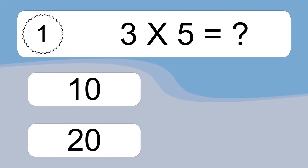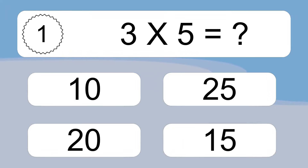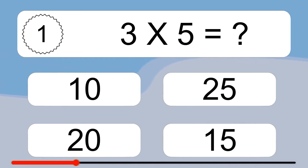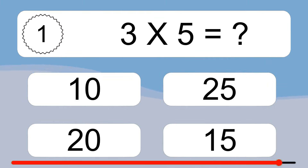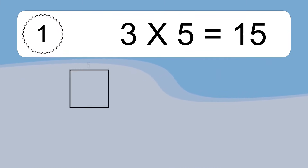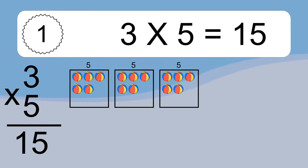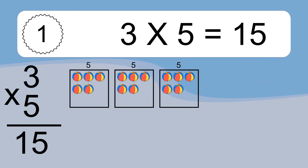3 times 5 equals what? 3 times 5 equals 15. We have 3 boxes, and each box has 5 colorful balls inside. If you count all the balls in all the boxes together, you will have 3 times 5 balls. This equals 15 balls.